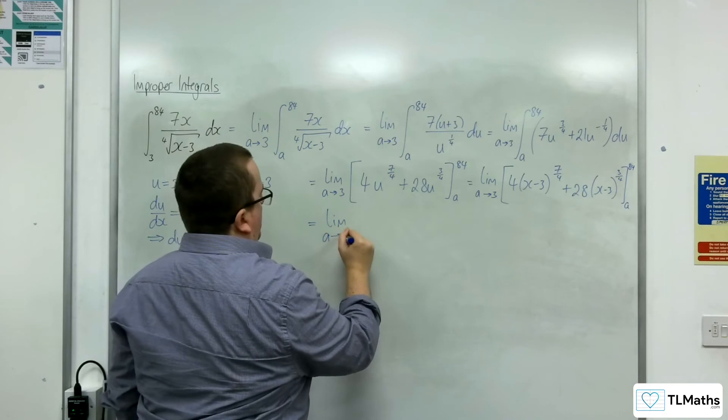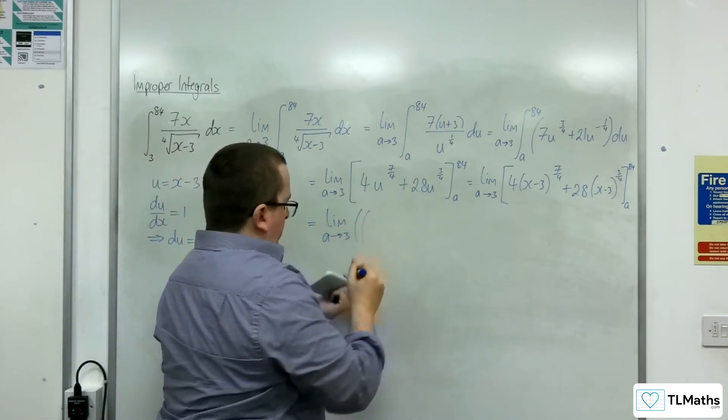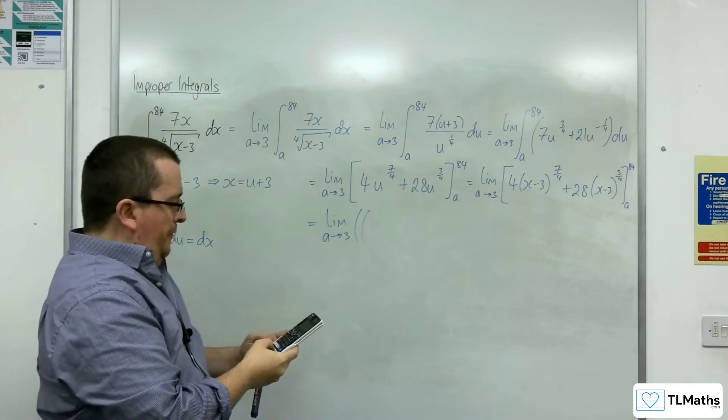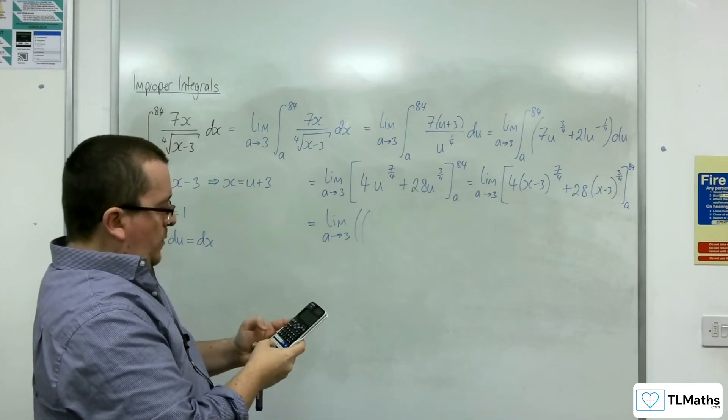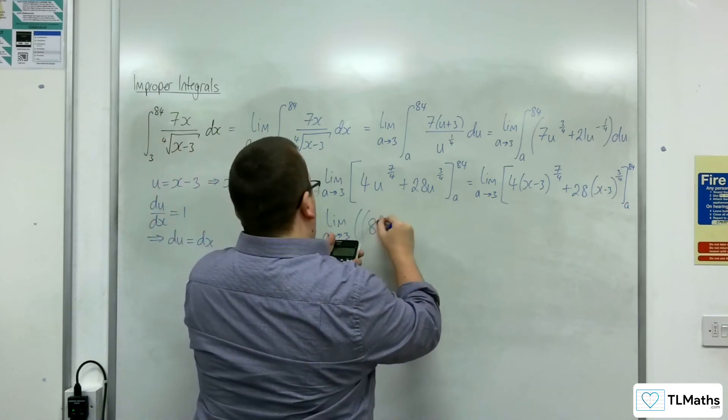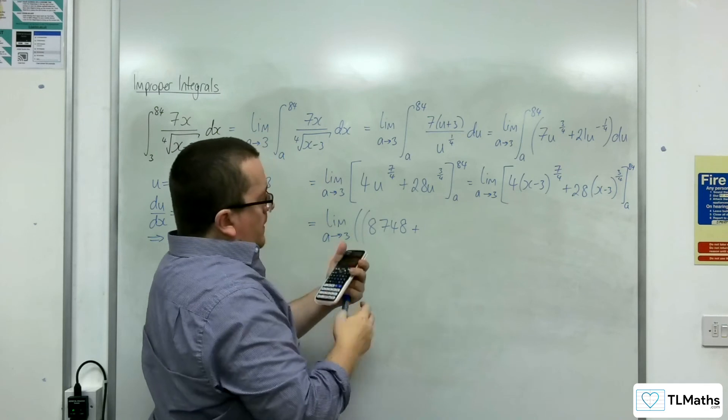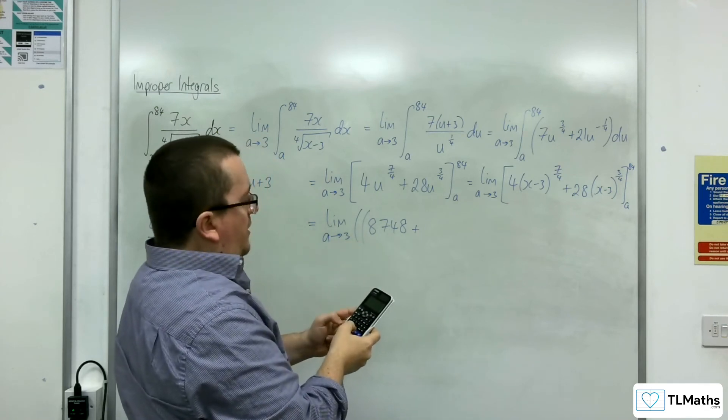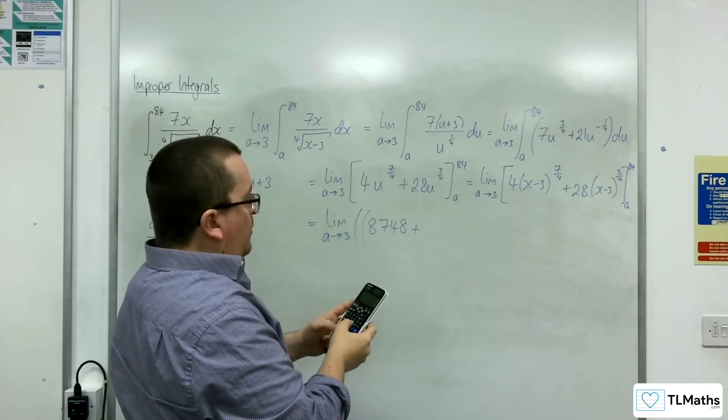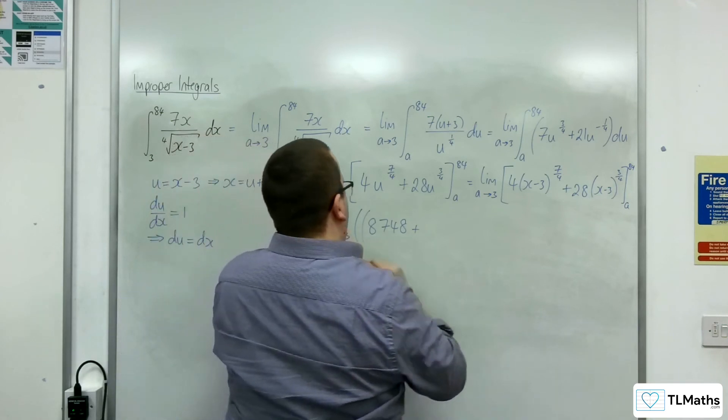Okay. So substitute the u back in for x minus 4, so we've got 4 lots of 84 take away 3 to the power of 7 quarters, which is 8,748. Then we've got 28 times 84 take away 3 to the power of 7 quarters, which is 756.